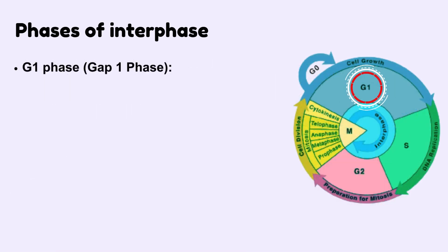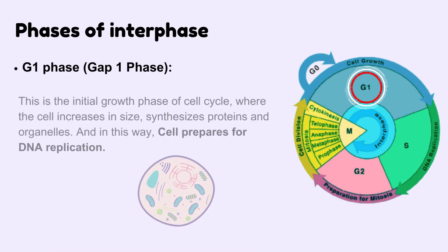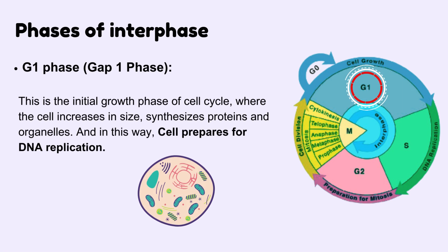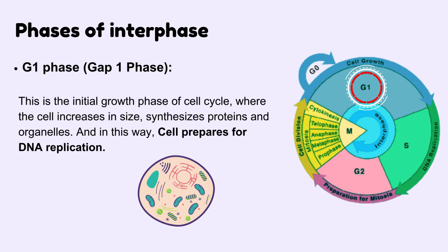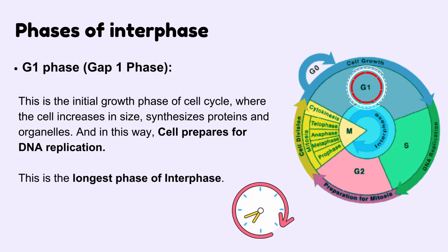G1 phase, also known as gap 1 phase, is the initial growth phase of the cell cycle, where the cell increases in size, synthesizes proteins and organelles. In this way, the cell prepares for DNA replication. This is actually the longest part of interphase.